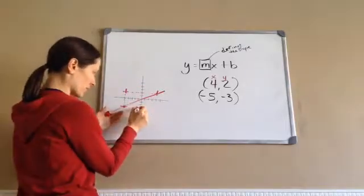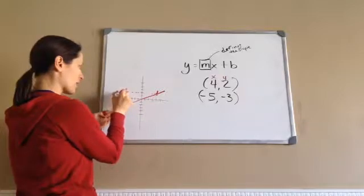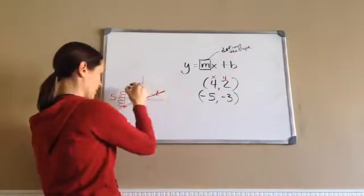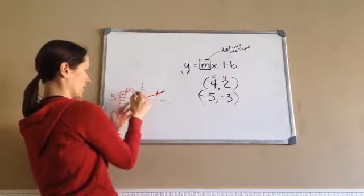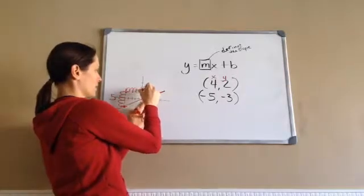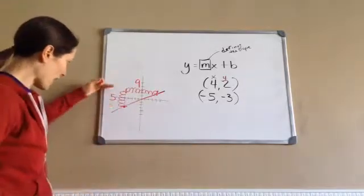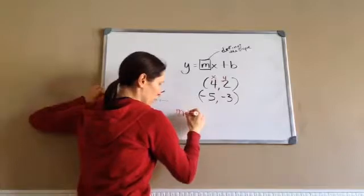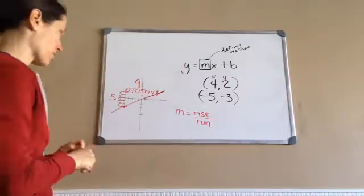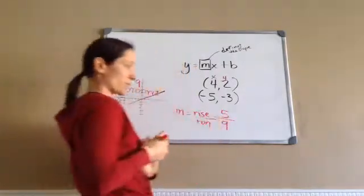How much did I rise? Well, look at these ticks. One tick, two ticks, three ticks, four ticks, five. So I'm going to put a five here. I rose five. And how much did I run? I'm going to follow these ticks. One tick, two tick, three tick, four tick, five tick, six ticks, seven, eight, nine. I'm going to put a nine right here. Rise nine. And remember, slope, just what M equals is rise over run. You should know that already. M equals rise over run. So rise is five, run is nine. The answer is five ninths.